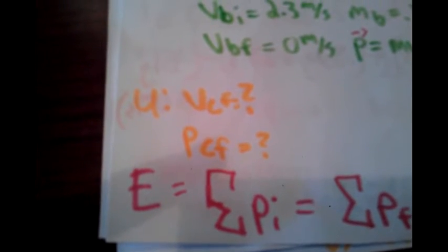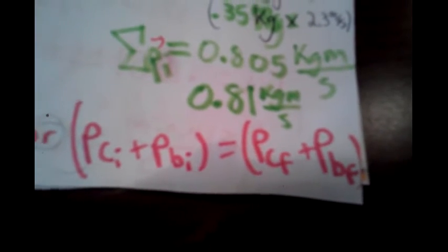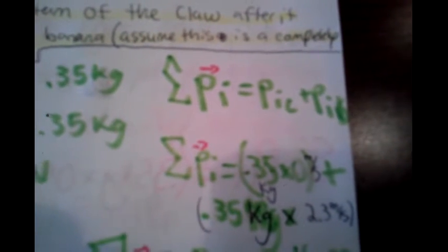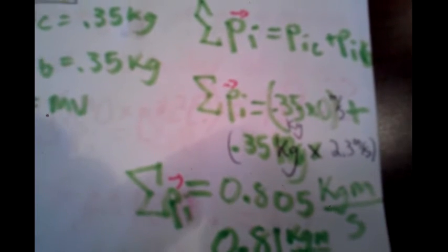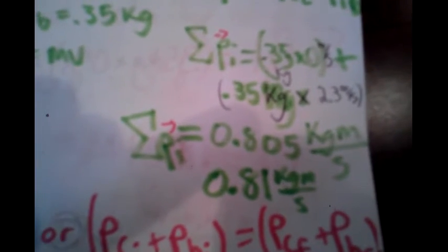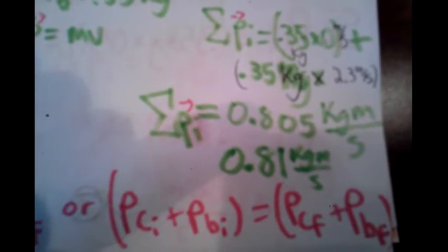Given the momentum of the claw, our unknown values are the final velocity and final momentum of the claw. The equation we will use is derived from net momentum initially equals net momentum finally, which can also be written as: momentum of the claw initially plus momentum of the banana initially equals momentum of the claw finally plus momentum of the banana finally. The momentum of the claw initially is zero because it has zero velocity. Therefore the entire initial momentum is the momentum of the banana: 0.35 kilograms times 2.3 meters per second, which equals 0.805 kilogram meters per second, or 0.81 for significant figures.